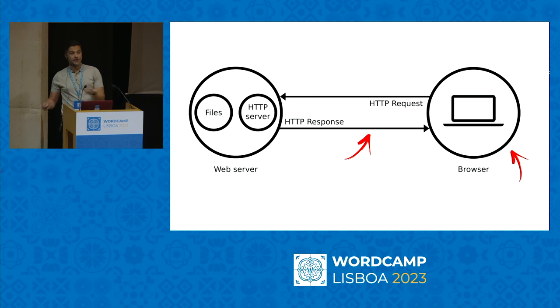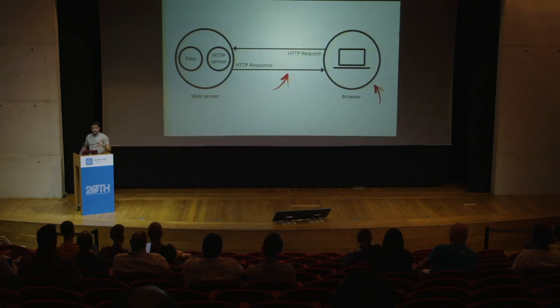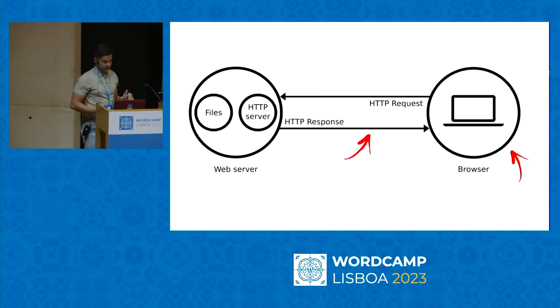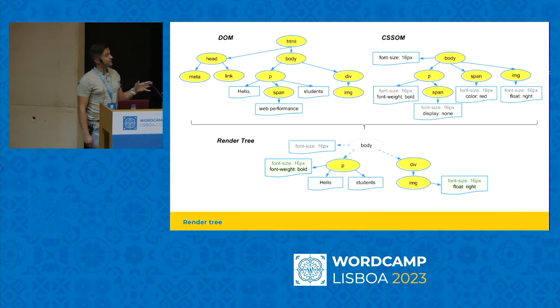Some of the assets are on the same server — those are first-party assets. Some are on different servers — those are third-party assets. If you have a Facebook Pixel or Google Fonts file, the browser needs to make a connection to that server as well. Front-end performance is what happens in the response: what it is and how the browser interprets it. How long it takes for the server to return the page affects how quickly you'll see content, but that's not front-end performance — that's something completely different.